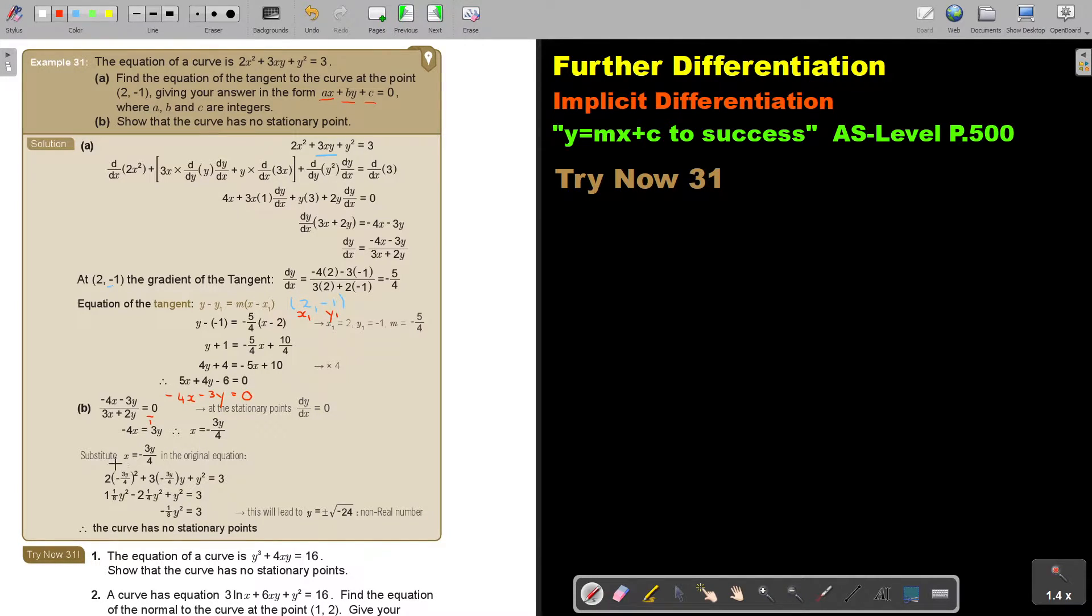Now you substitute this in the original equation. If you do that, this will lead to a negative square root. So there's no real solution, just non-real roots. So the curve has no stationary points. That's how you prove it.